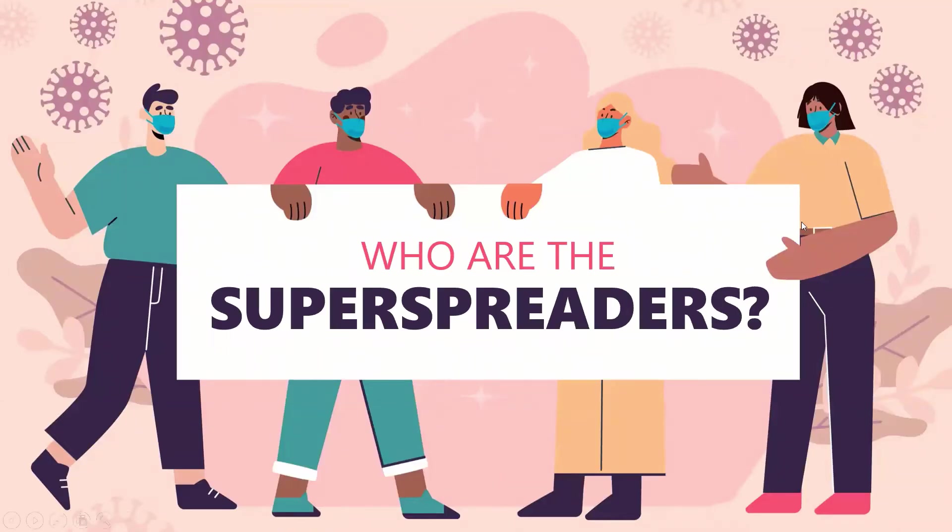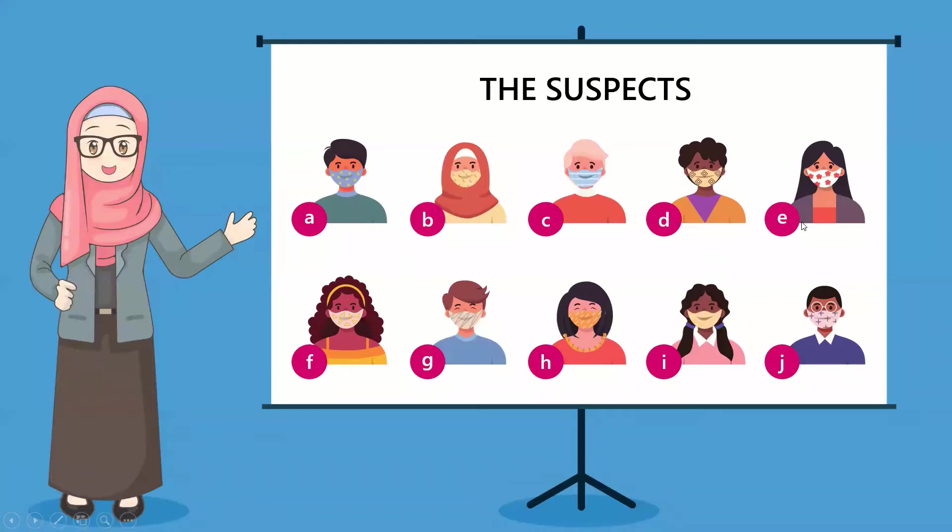Hello everyone. Let's talk about super spreaders. Assume there are 10 suspects at the scene of the crime. All of them were infected really quickly, and we know that the virus transmits from human to human. Only one person was infected in the beginning. Who is this person most likely to be?